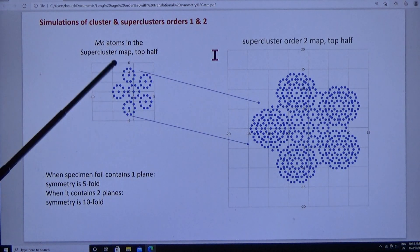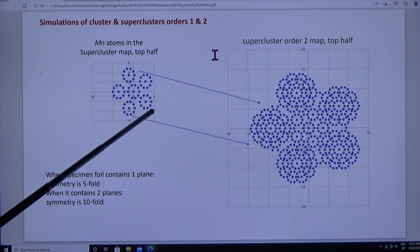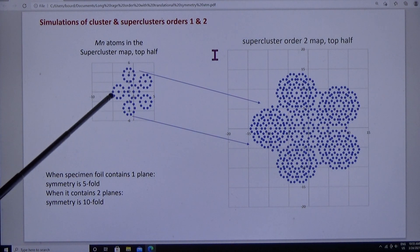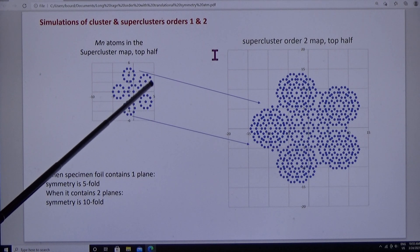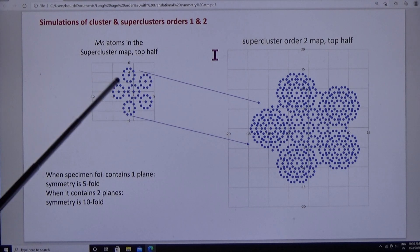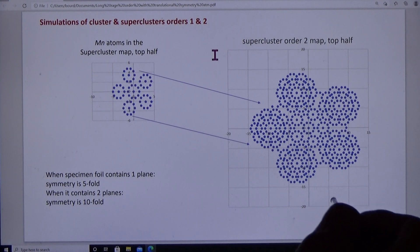Here's a model of the supercluster, which you just saw, with five clusters in a circle. The cluster has two planes, so it looks like tenfold, but the supercluster has one plane, and that's why it's fivefold.